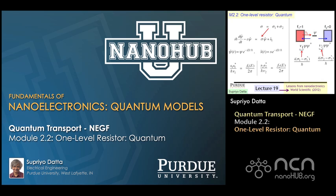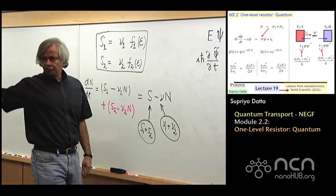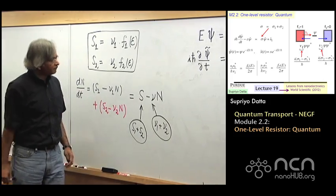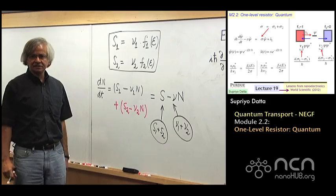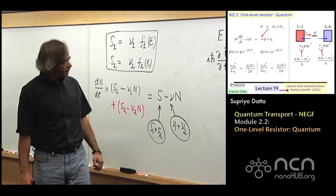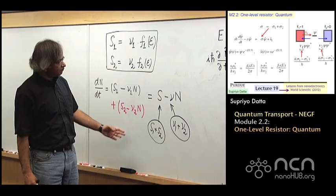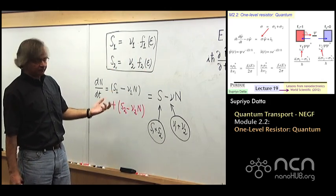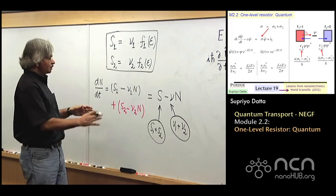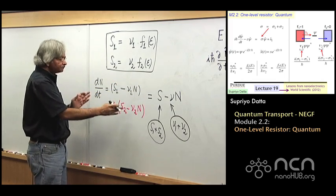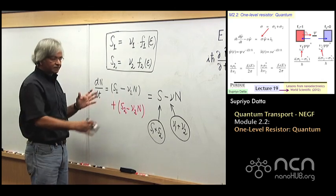Nanohub U, online instruction. Welcome to module 2.2. If you remember, what we did in 2.1 was we talked about this one-level device and did a simple semi-classical treatment. That is, equations like this that we discussed in module 1. These are often called rate equations.